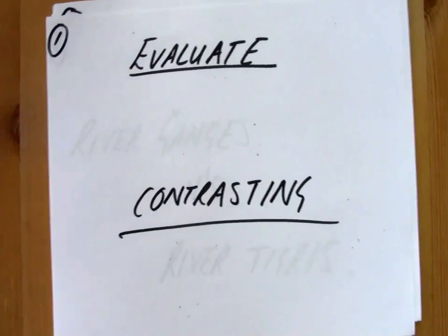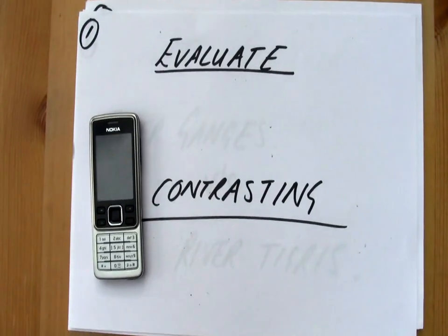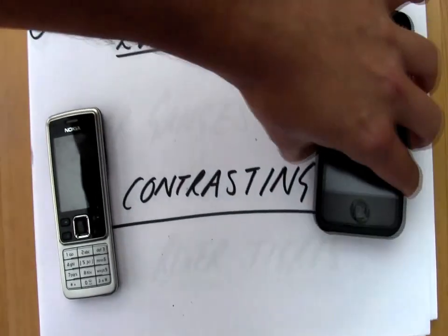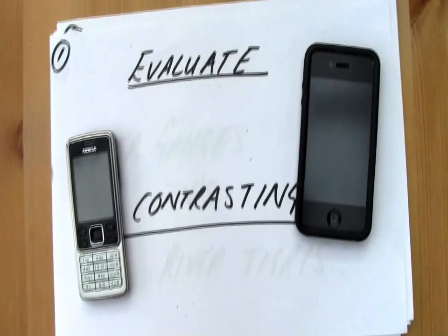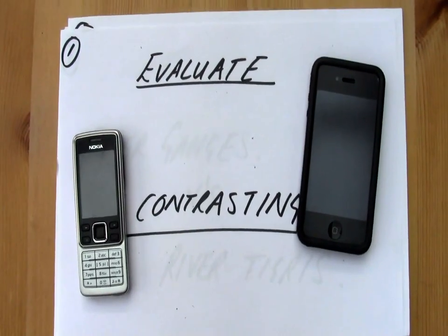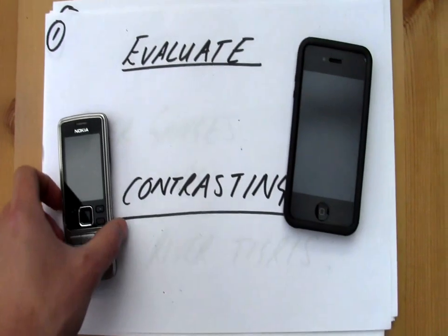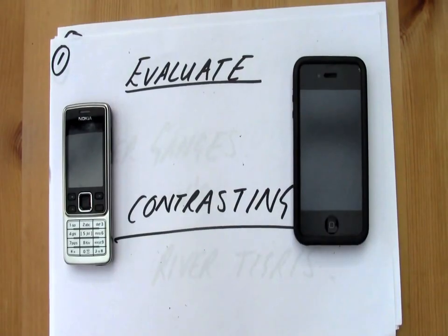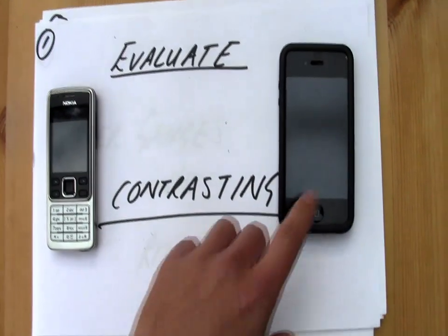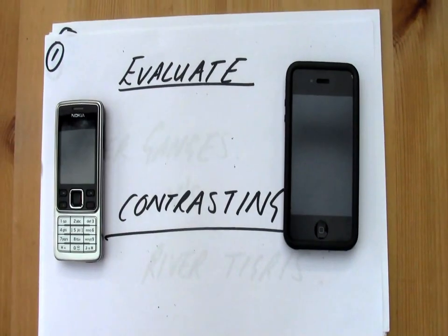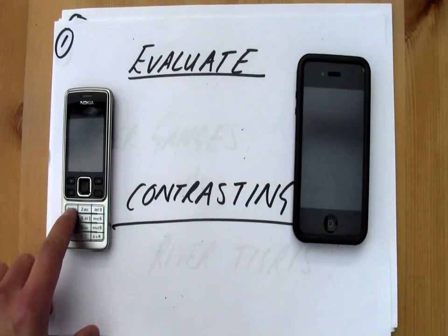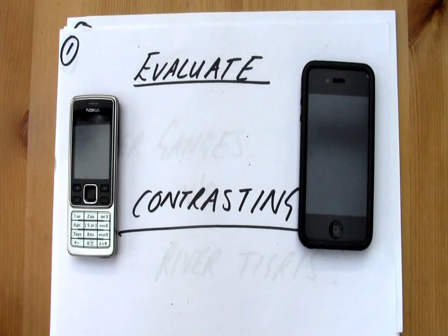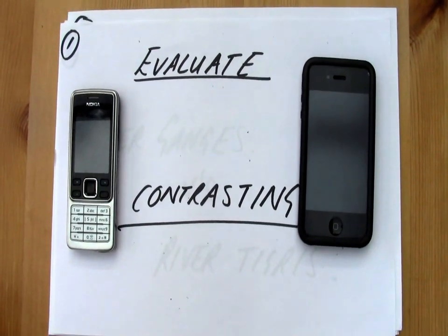We can use the example of these two mobile phones. On the left hand side I have an old Nokia phone and on the right hand side I have an iPhone. Now if we started to contrast these we could look at some of the differences — I might be able to get on the internet and Facebook on this phone, but on this phone I can't really do much other than play Snake, make calls and send text messages.